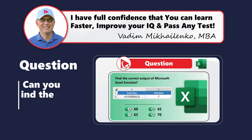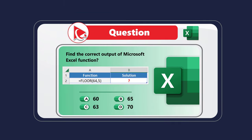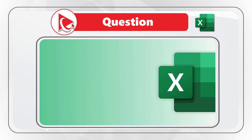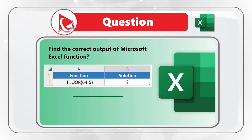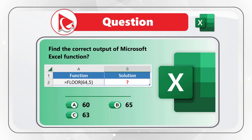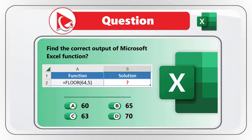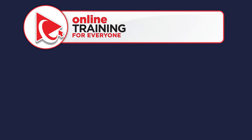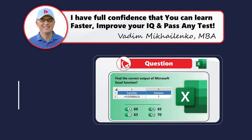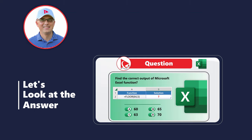Here's another amazing question seen on the test more and more often. You need to find the correct output of a Microsoft Excel function. You are presented with the statement: =FLOOR(64,5). You have four choices: Choice A, 60; Choice B, 65; Choice C, 63; Choice D, 70. Take a close look, refresh your memory, and see if you can select the right answer.